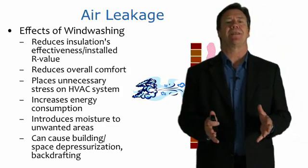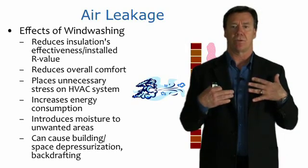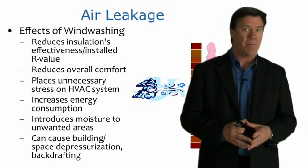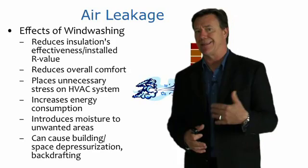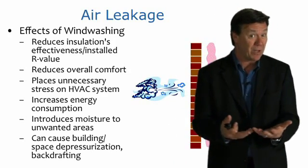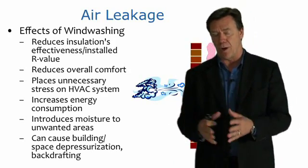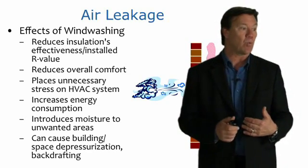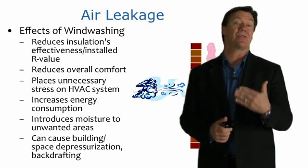Imagine going outside on a windy day with only a really nice sweater. The sweater may be a good insulator, but because air can flow through it, it scavenges the heat away and doesn't work very well at keeping you warm. That's because of wind washing, and that's why we have air barriers and want to have an air barrier system.